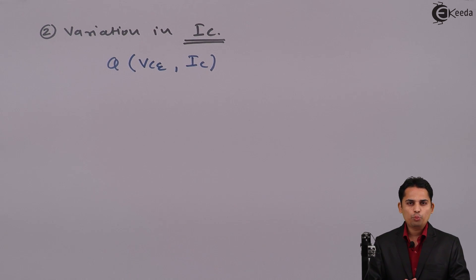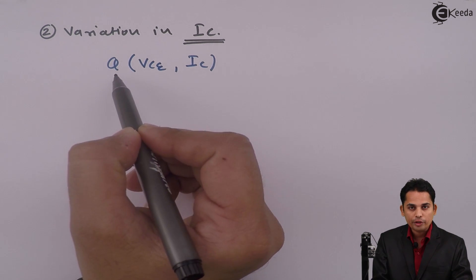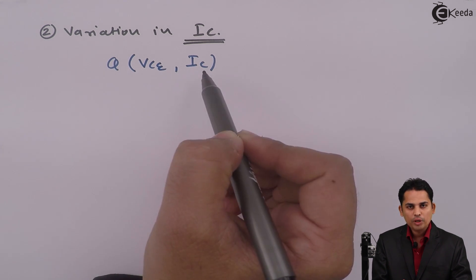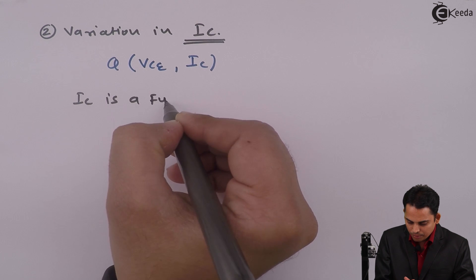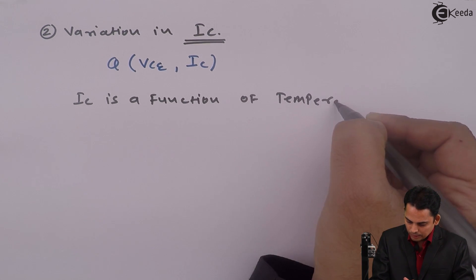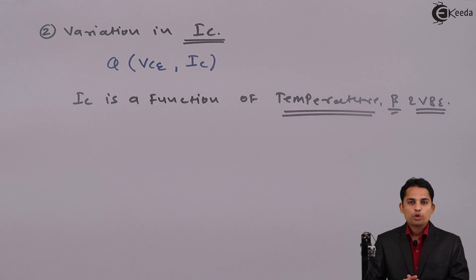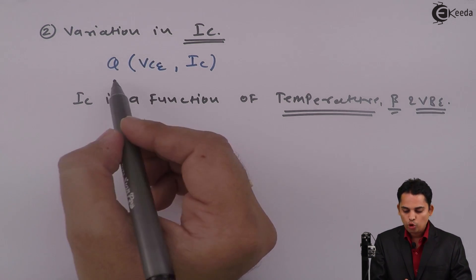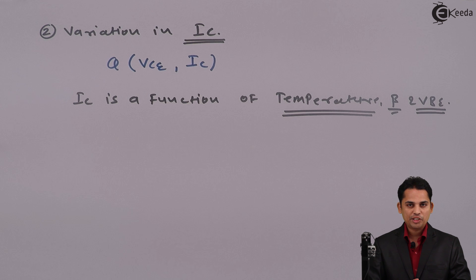Now, we want Q point to be stable. For that, VCE and IC both must be stable. I want Q point to be stable, for that VCE and IC must have stable values. But IC is a function of temperature, beta, and VBE. So as temperature, beta, or VBE is changing, IC will change. If IC changes, Q point will change. And hence, we are going to stabilize IC to get stable Q point. This is the second reason why we are biasing BJT.